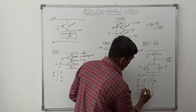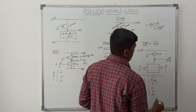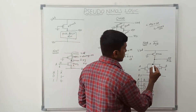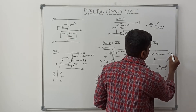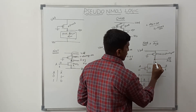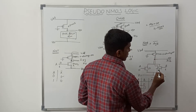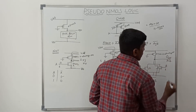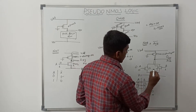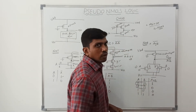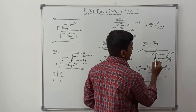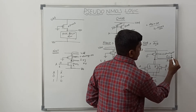Verifying with the circuit. Taking A=0, B=1: T1 turns off, T2 turns on. The PMOS transistor is always on because its gate terminal is permanently connected to ground. VDD connects to ground through PMOS and T2 transistor, so output is 0. Taking A=0, B=0: both transistors T1 and T2 turn off. Only the PMOS transistor is on, so VDD connects to the output side through the PMOS transistor, giving output 1.